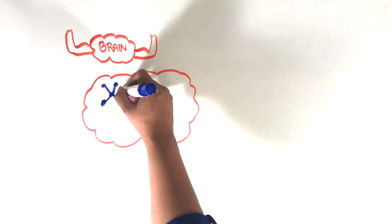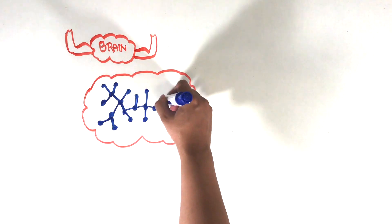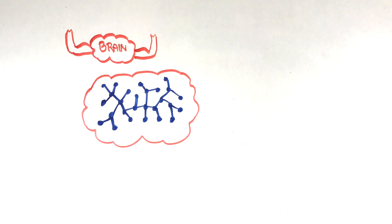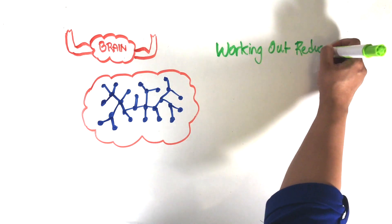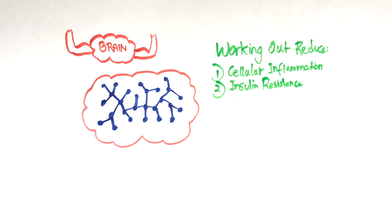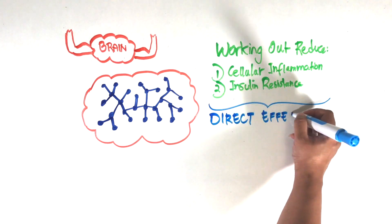As just mentioned, exercise improves neuronal connectivity and therefore increases learning and memory skills. So how do these actually happen? The benefits of exercise are both direct and indirect.